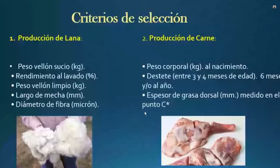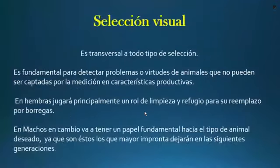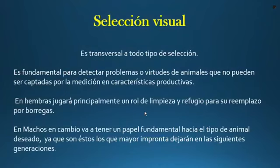En el caso de la producción de carne, se considera el peso corporal al nacimiento, que debe ser de 3 a 4 kilogramos, el destete que debe ser entre 3 a 4 meses de edad —en sistemas intensivos a los 2 meses— y el espesor de la grasa dorsal. Esto va de acuerdo a la expectativa del productor y del mercado según su sistema de producción. Las características del fenotipo son lo que se puede observar visualmente, lo que se llama la selección visual del productor.